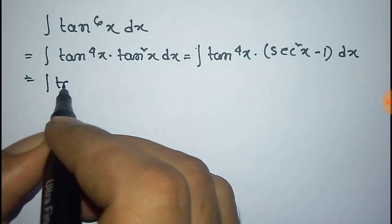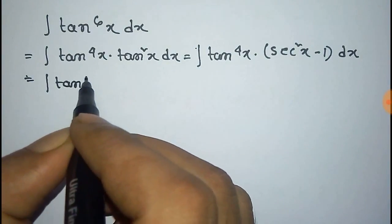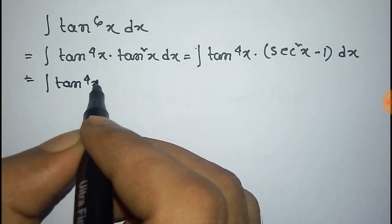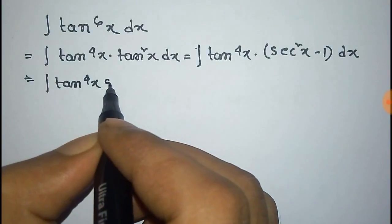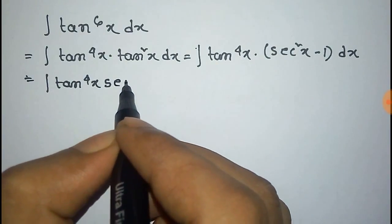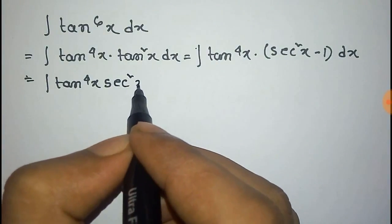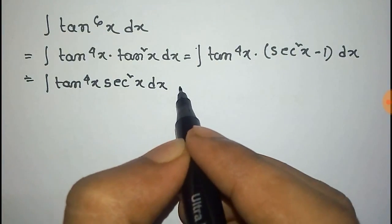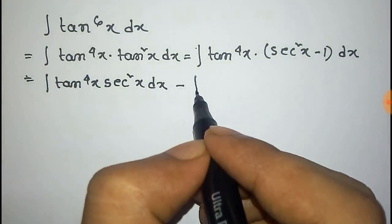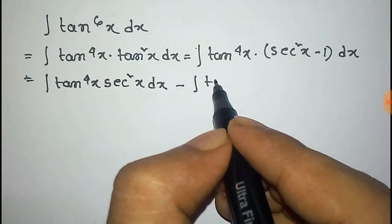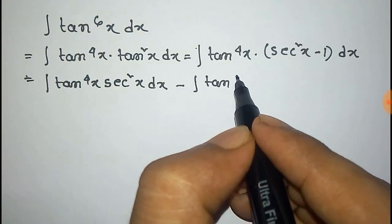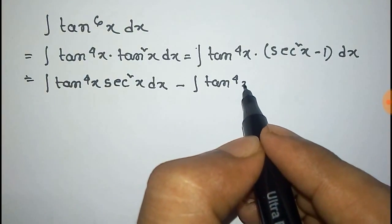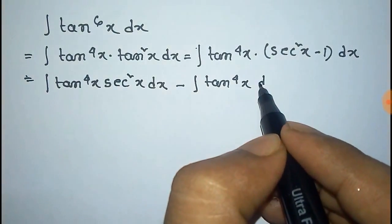So this is equal to: integration of tan⁴x into sec²x dx, minus integration of tan⁴x dx.